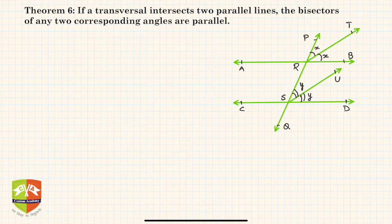Welcome friends, back to our theorems. We are now going to prove another one. In this case, it's given that if a transversal intersects two parallel lines, the bisectors of any two corresponding angles are parallel.